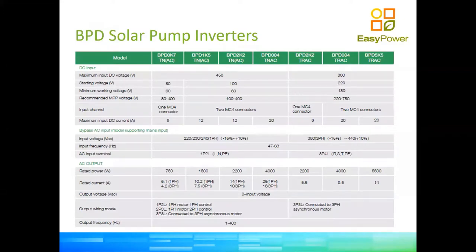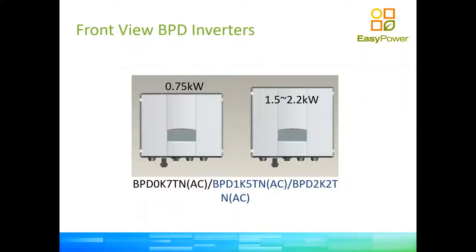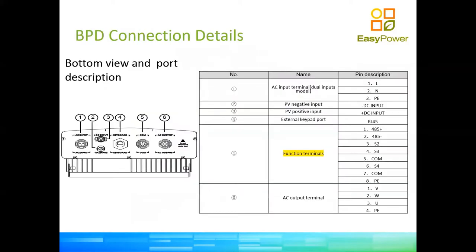The BPD comes in seven models ranging from 750 watts to 5,500 watts. There are slightly different physical sizes — small, medium, and large. All connections are on the bottom, covering AC, communications, DC input, and AC input. The inverter comes with mating connectors so you can make waterproof connections on your cables. It can run any type of asynchronous pump, supports AC and DC input, and has an AC bypass function completely built in.